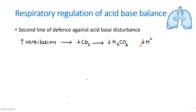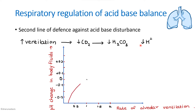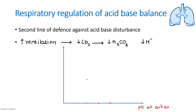This can be represented by a graph where the x-axis shows the rate of alveolar ventilation and the y-axis shows the pH change in body fluids. As alveolar ventilation increases, the pH also increases, moving more towards alkalosis. The reverse is also true — whenever there is a change in arterial pH, the lungs will regulate the rate of ventilation such that pH returns to normal.